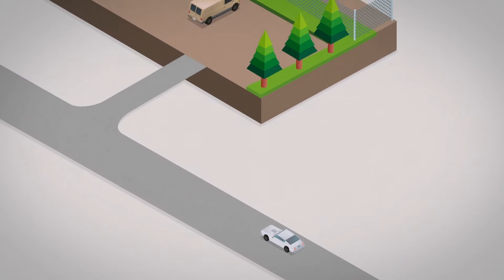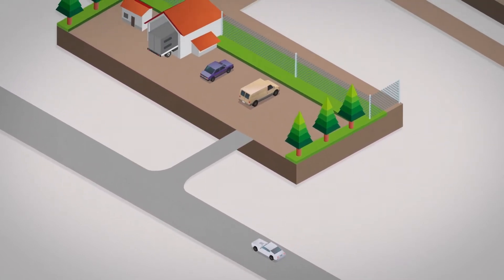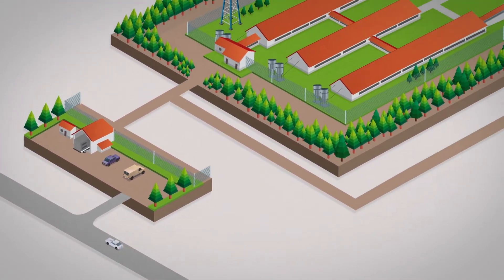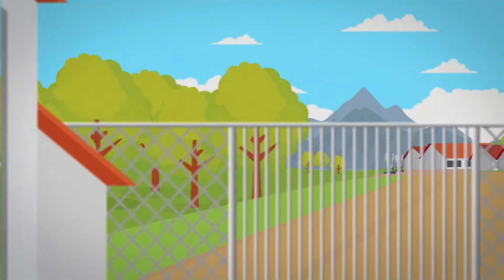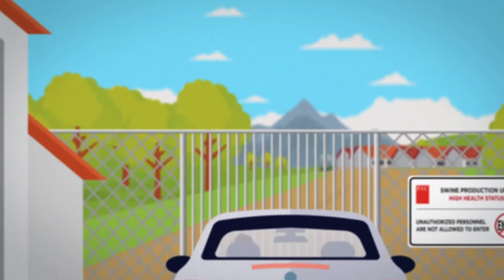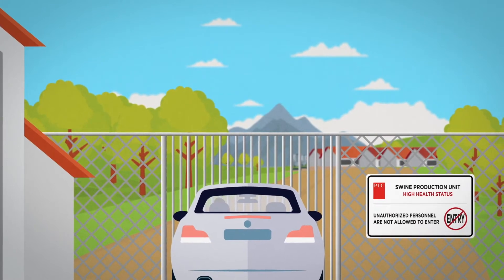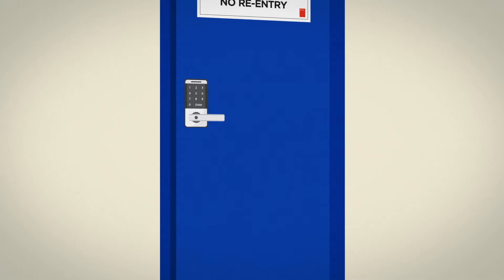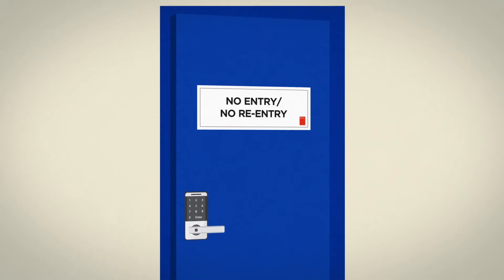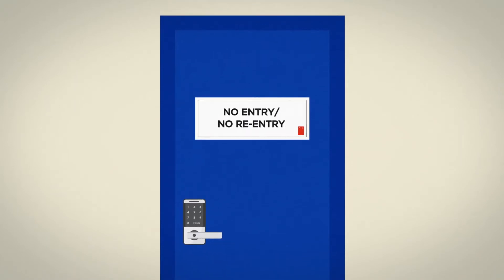To restrict access to the production unit, a barrier must be placed to obstruct access to the site from roads that connect directly to public roads. The barrier must obstruct driveway access when the farm is unattended. In addition, all exterior doors must have clear no entry, no re-entry signs and must be kept locked to prevent access from the outside.